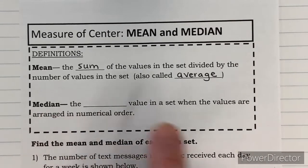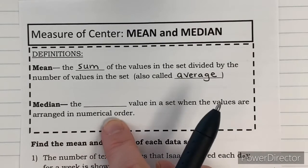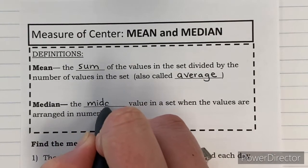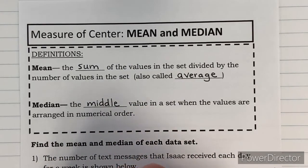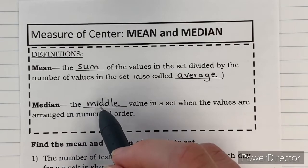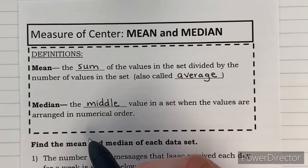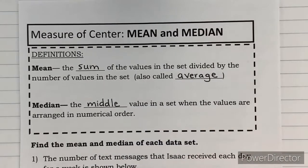Median is the middle value in the set when the values are arranged in numerical order. Now, the reason or how I remember median and middle is because when you're on the interstate, that strip of land that's in between the interstates, that's called the median and that's in the middle. That's how I remember it. Kind of lame, but it works for me.